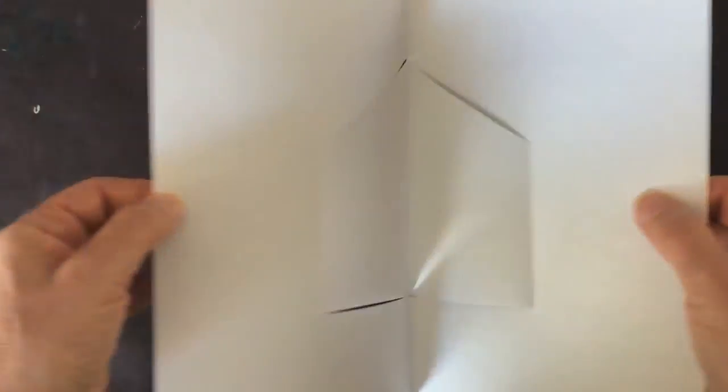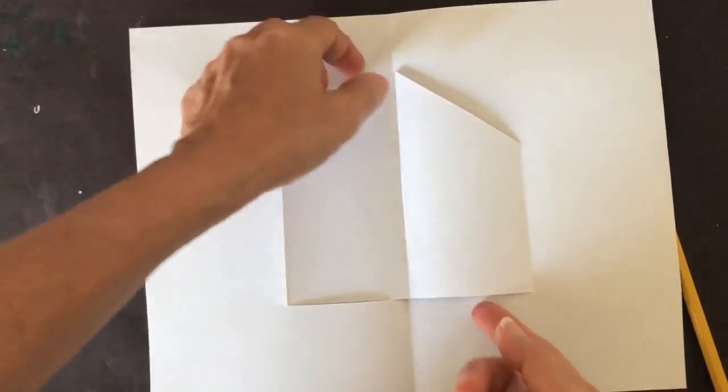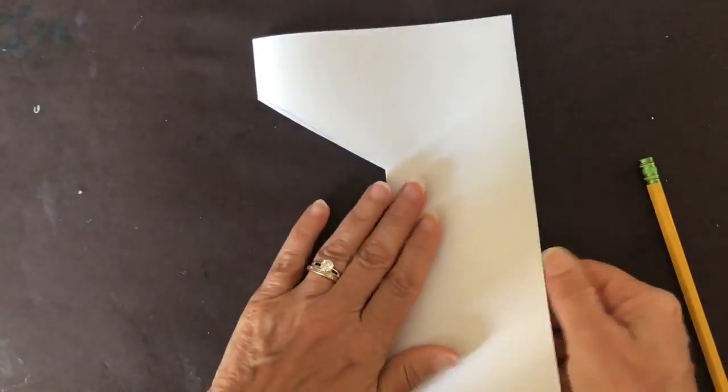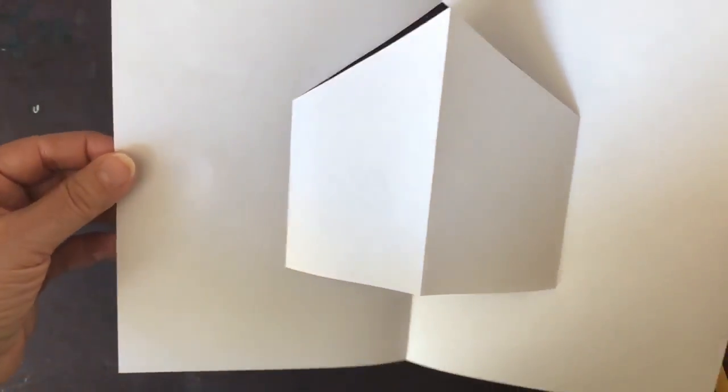Once I open my card, you'll see a valley fold here and here, but you want this one to pop up and be a mountain fold. Lay it down, close it, and there you have your pop-out house.